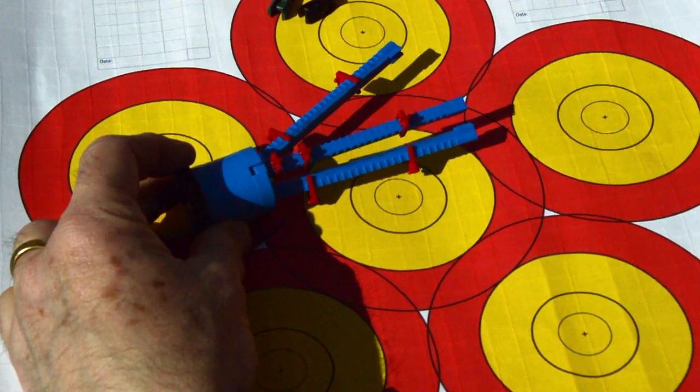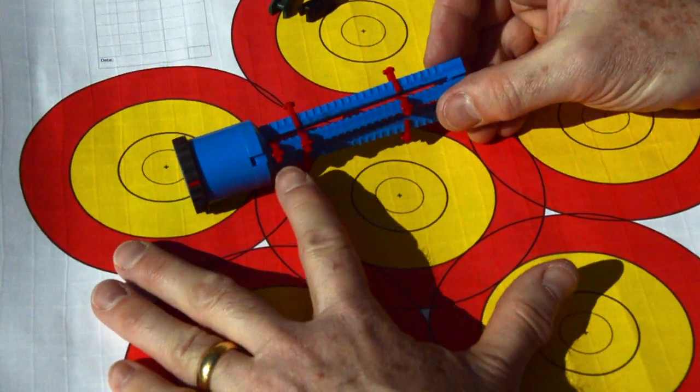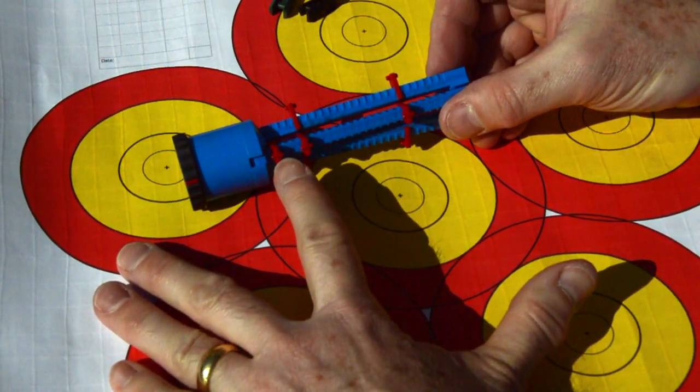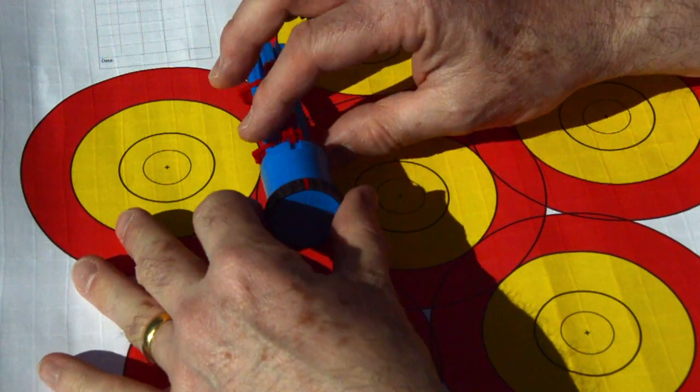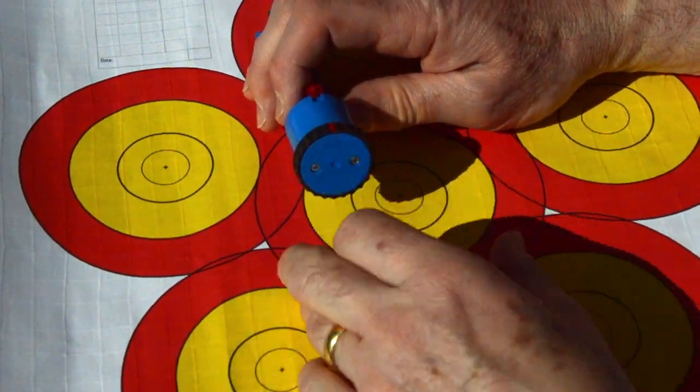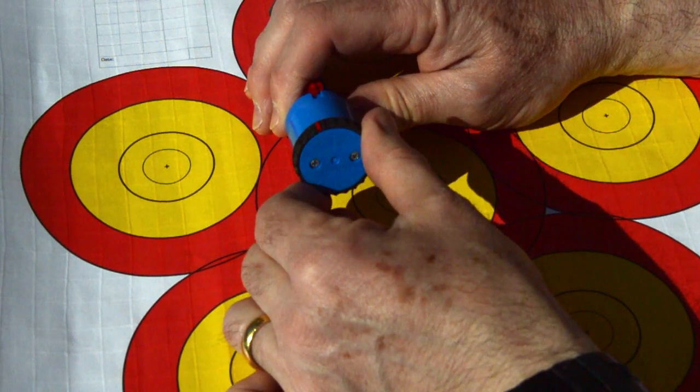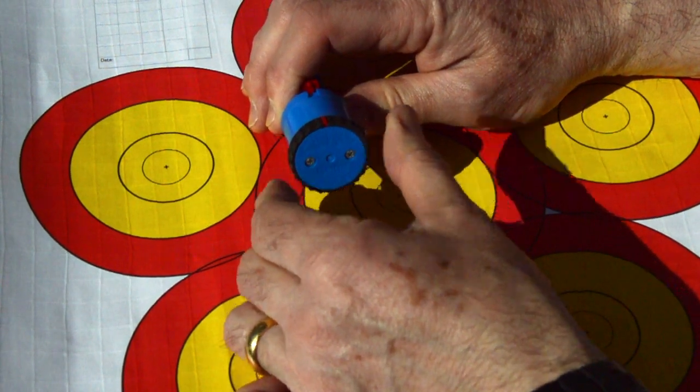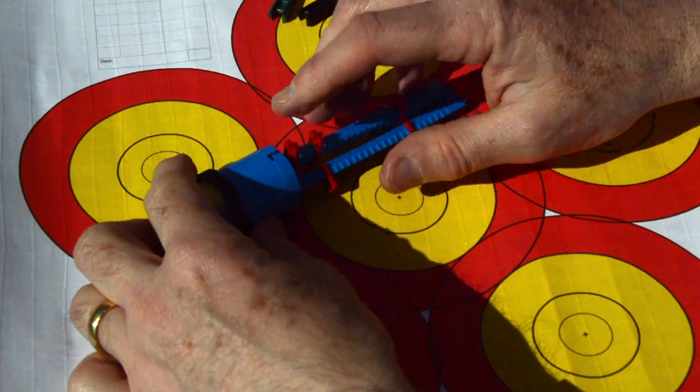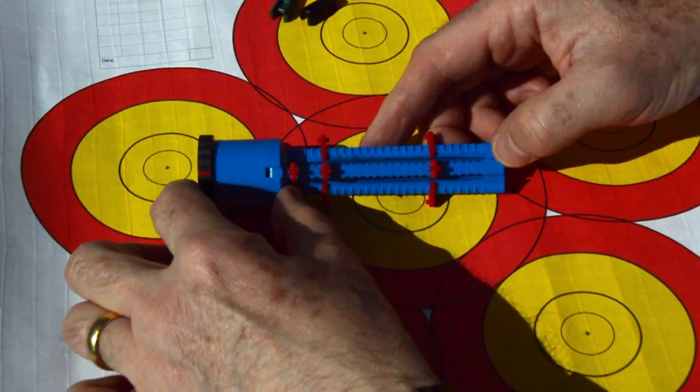And the other thing is I've marked which is going to be my cock fletching. So on the back here there's a little scale and you can offset it either positive or negative. I'm going to set it at zero and I've marked that position as being my starting point.